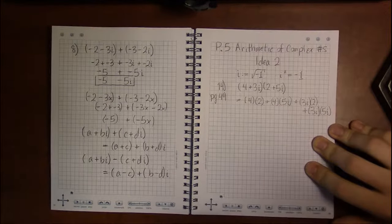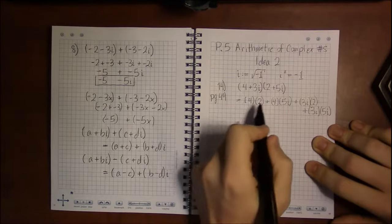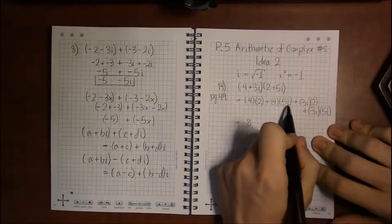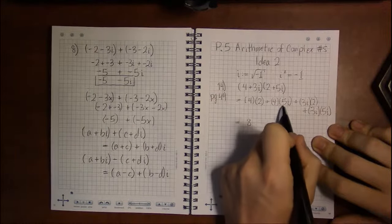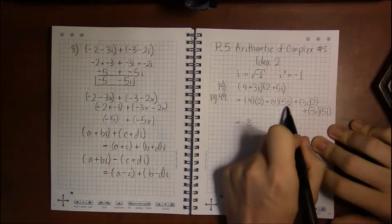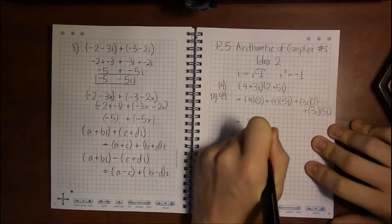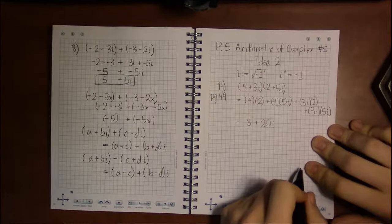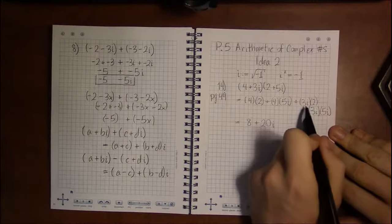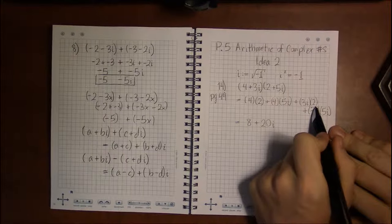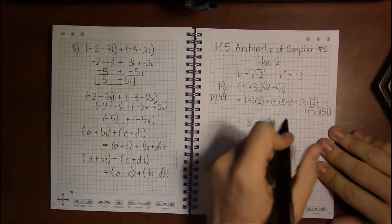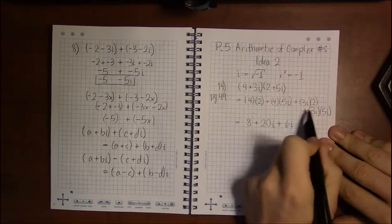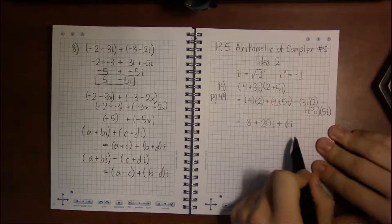Well, what happens when I do that? Well, 4 times 2 is 8. 4 times 5i, if I think about this as 4 times 5x, 4 times 5x would be 20x, but it's not x, it's i. Same thing with 3i times 2. If I think about this as 3x times 2, it's going to be 6x. But instead of x, I've got an i written there instead. But I'm going to treat it the exact same way as if it were x.